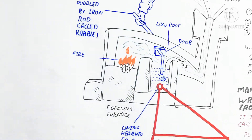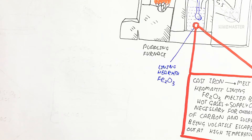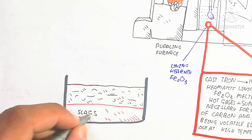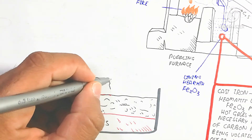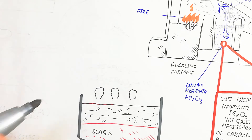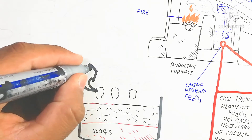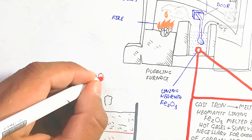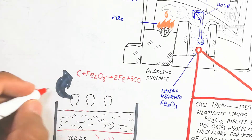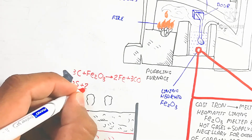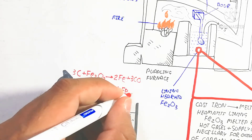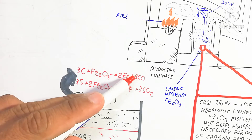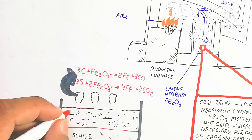Gas is released when carbon and sulfur combine with oxygen. In the lining hearth, pure iron is separated and slag moves downward as a by-product and waste. The balanced equations are: for carbon removal, iron oxide reacts with carbon to produce iron and carbon monoxide (Fe2O3 + 3C → 2Fe + 3CO); for sulfur removal, three sulfur atoms react with iron oxide to produce four iron atoms plus three sulfur dioxide molecules (2Fe2O3 + 3S → 4Fe + 3SO2).